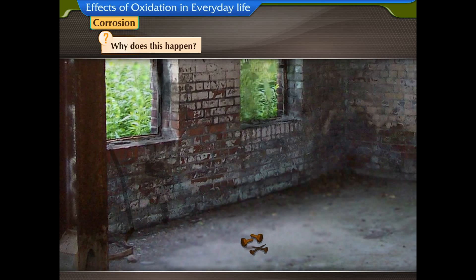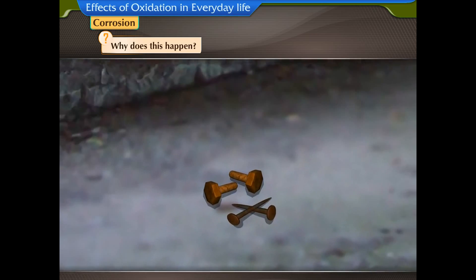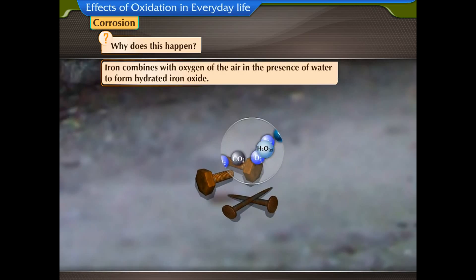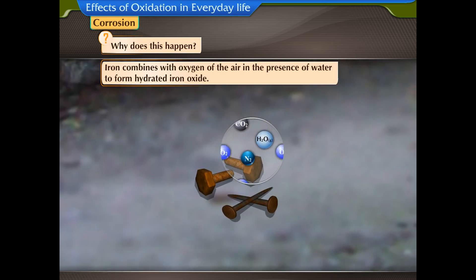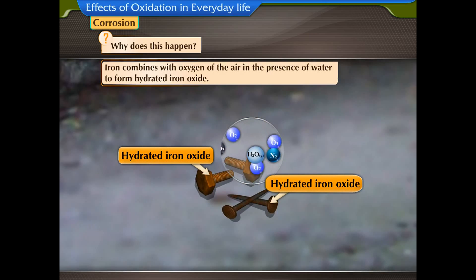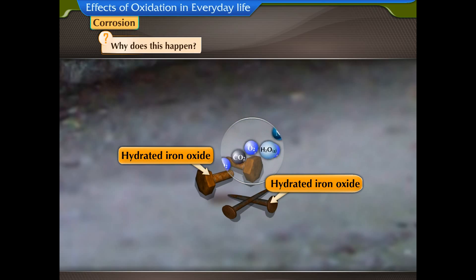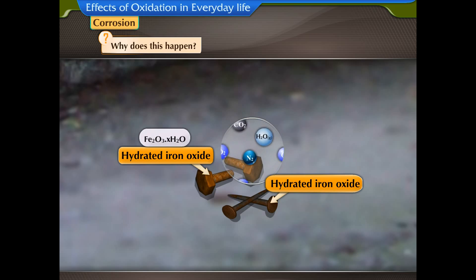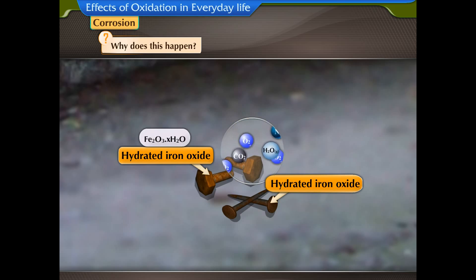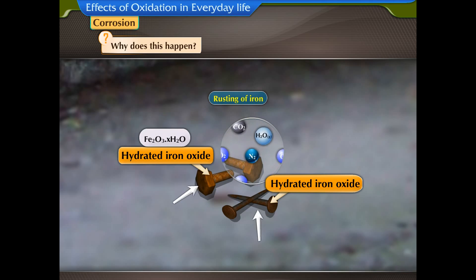When iron nails and iron screws are exposed to moisture, iron combines with oxygen of the air in the presence of water to form hydrated iron oxide. The chemical formula is Fe2O3·xH2O. This process is commonly called rusting of iron. The red layer formed is rust.